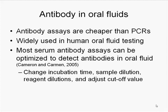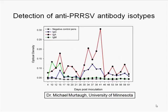The fourth study covered anti-PRRS antibody in oral fluids. On the human side, oral fluid diagnostics primarily use antibody detection, not PCR. Antibody assays are cheaper — PCR costs about $25 while an antibody assay costs $5. At the pen-based level you lose the advantage of pooling serum samples, so antibody-based oral fluid assays could offer real cost savings. A 2005 paper established that most serum antibody assays can be optimized to detect antibodies in oral fluid by changing incubation times (usually longer), sample dilution, reagent dilutions, and adjusting the cutoff.